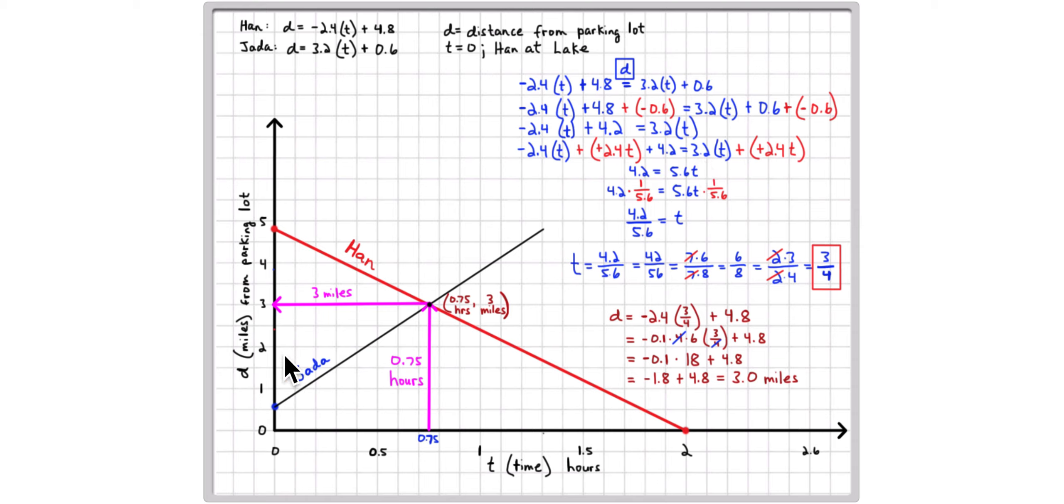And of course they're going to meet in less than an hour because they're not 5 and 6 tenths miles apart. They're only 4 and 2 tenths miles apart, which is 3 fourths of 5 and 6 tenths. So it's 3 fourths of an hour.